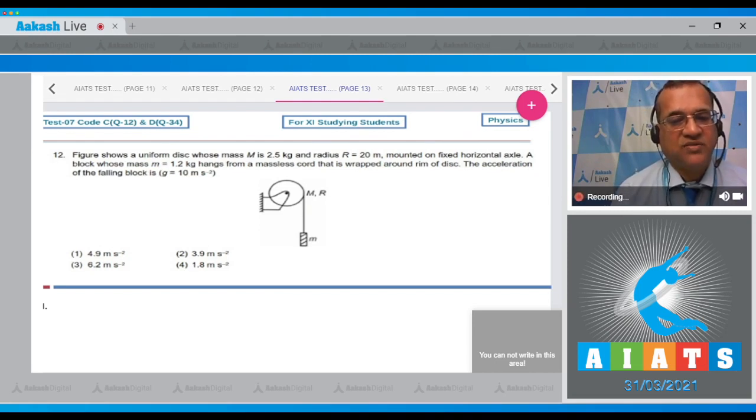Now what do you find in this case, this is constrained motion. So in this case mg will be down, the tension will be up, and it has an acceleration a, and likewise this tension will give rotational motion to the disk. So write the equation for the block and for the disk.